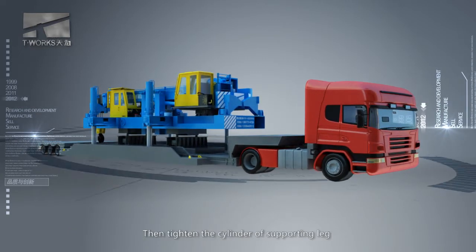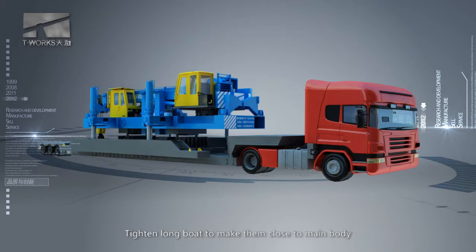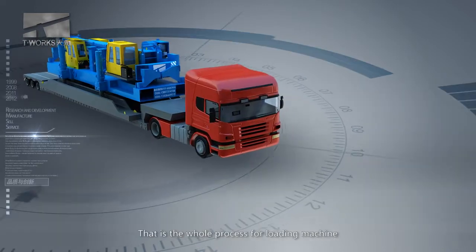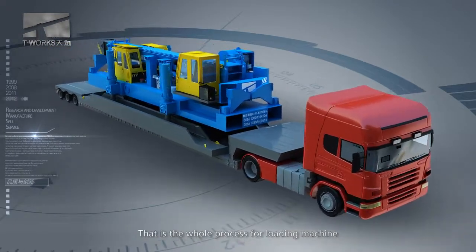Then, heighten the cylinder of supporting neck head along bolt to make them close to main body to ensure safe transportation range. That is the whole process for loading machine.